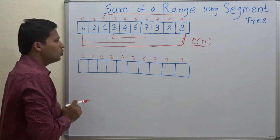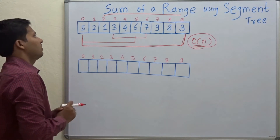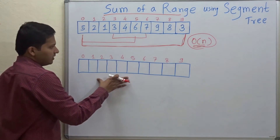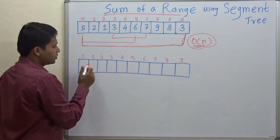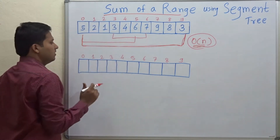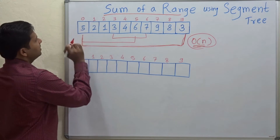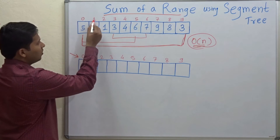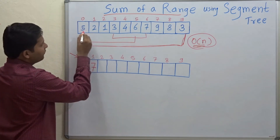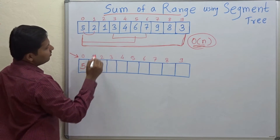Now, if we want to minimize this time complexity, there is a solution. You take another array and store the cumulative sum at each position. For example, index 0 stores 5. Then at index 1 you store 5 plus 2, which is 7.